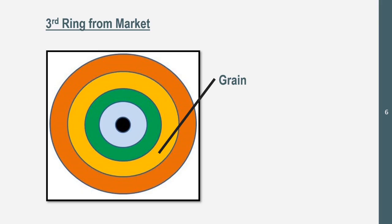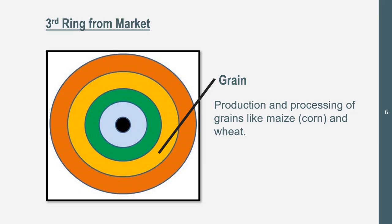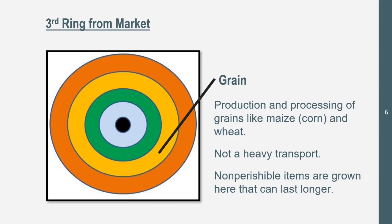Our third ring from the market is grains, stuff like wheat and soybeans. This is the production and processing of grains, like maize, which is corn, and wheat. These are not heavy to transport, so they can be farther from the market. It makes sense they can be farther from the market than our forest and perishable items.